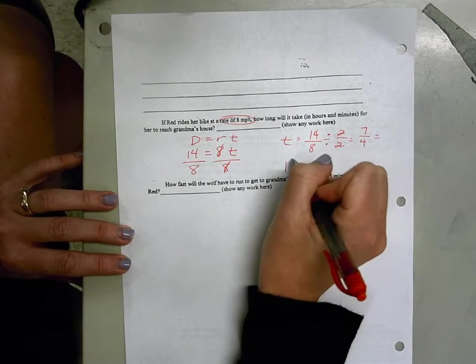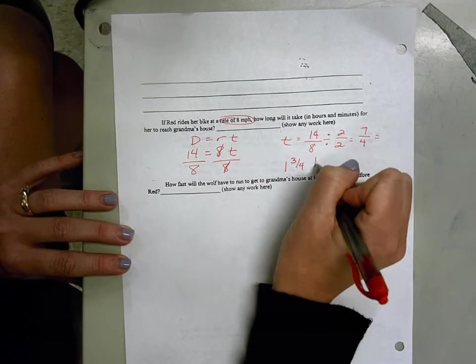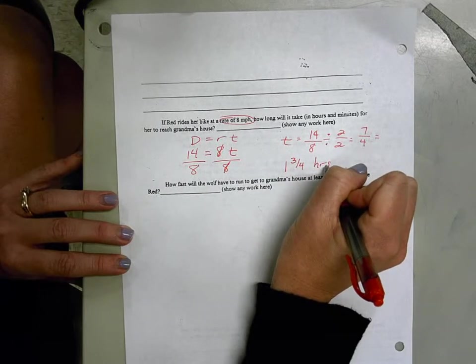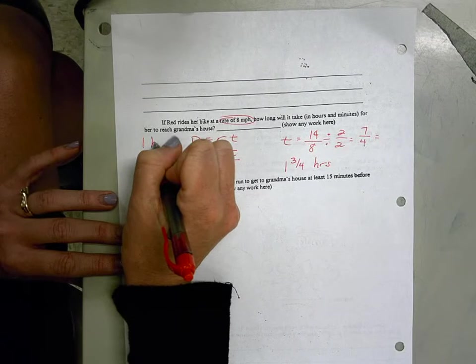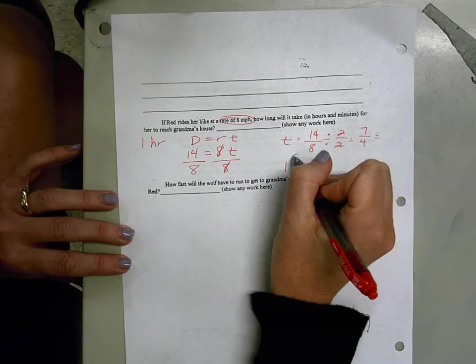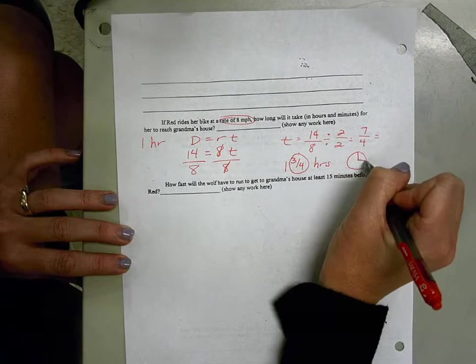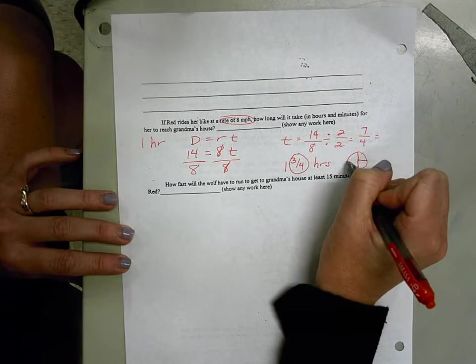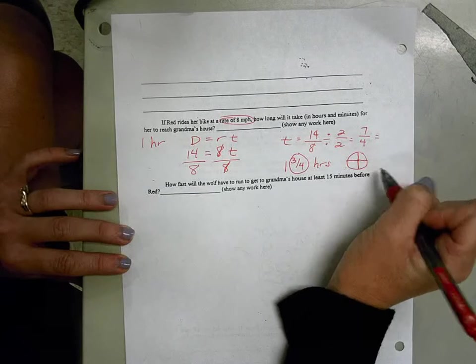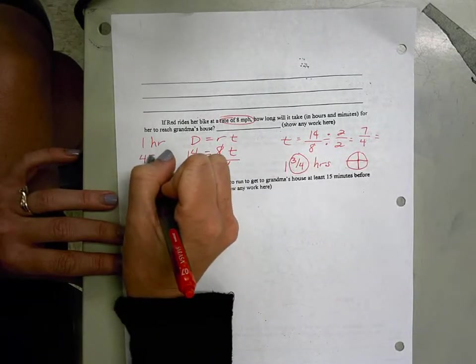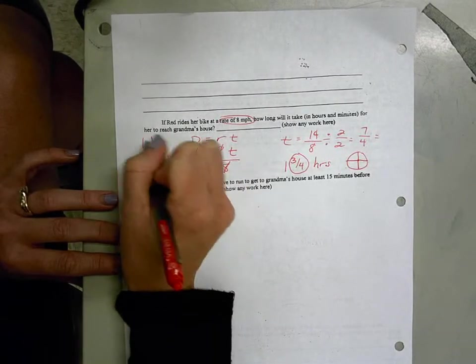which is 1 and 3 fourths of an hour, but it does say in hours and minutes. So that would be 1 hour, and then 3 fourths of an hour. If you think about a clock, 3 fourths of an hour, we would have 15 minutes, and then 30 minutes, and then 45 minutes. So 1 hour and 45 minutes for Red.